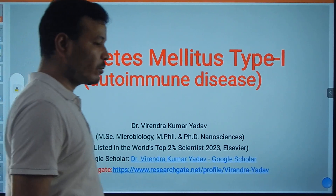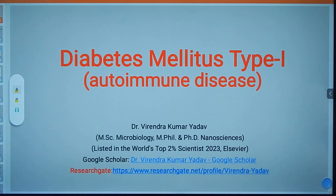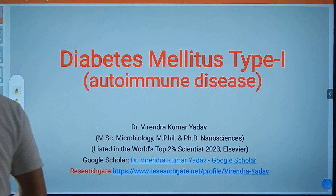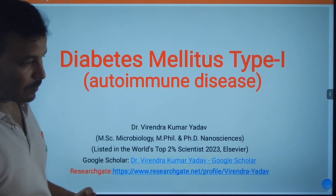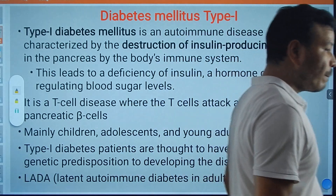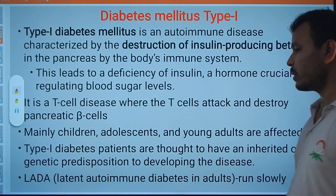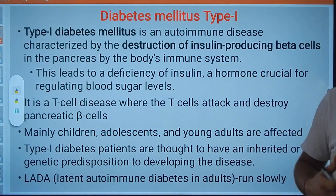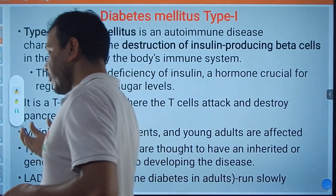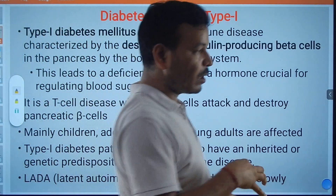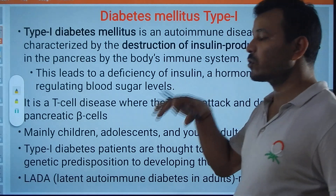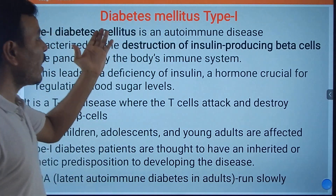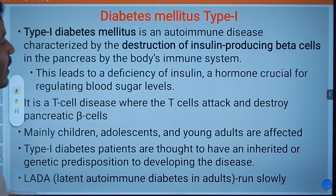Hello everyone, welcome to my YouTube channel. Today we will talk about one autoimmune disease, that is Diabetes Mellitus Type 1. There is Type 2 also, but that is not an autoimmune disease. Type 1 is an autoimmune disease where the beta cells — which are responsible for producing insulin — are being damaged. Our body starts recognizing these beta cells as foreign and starts attacking them, decreasing insulin production, which leads to Type 1 Diabetes Mellitus.